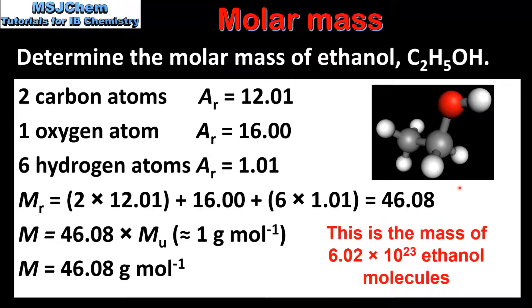To summarize, the molar mass of ethanol is 46.08 grams per mole. This tells us that one mole of ethanol has a mass of 46.08 grams.